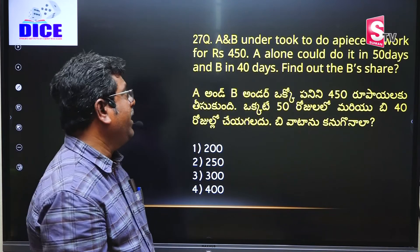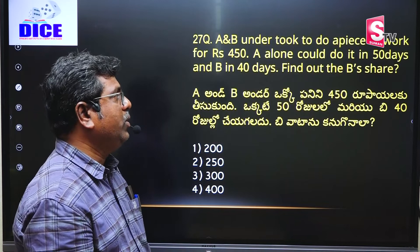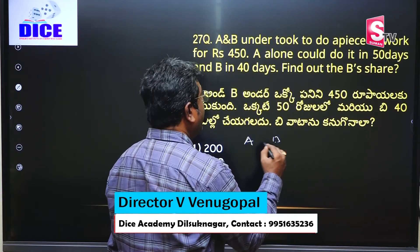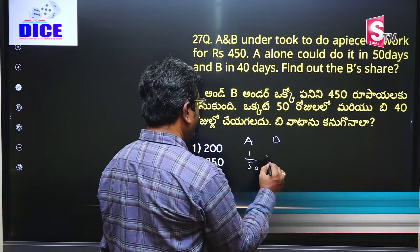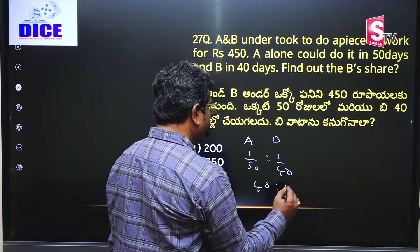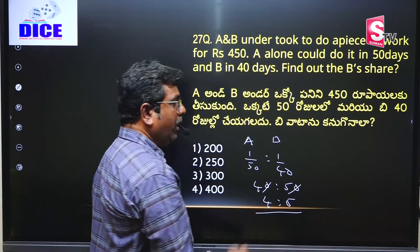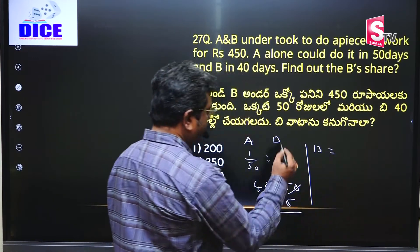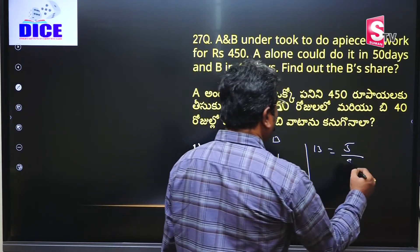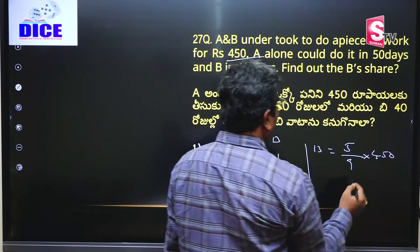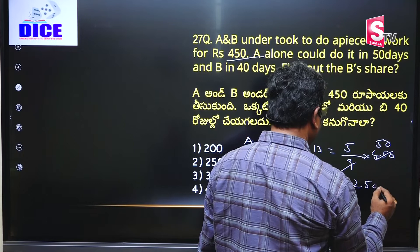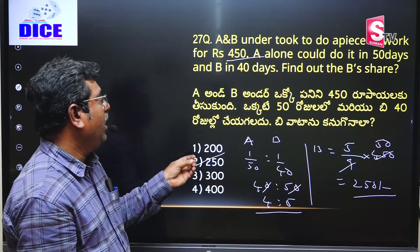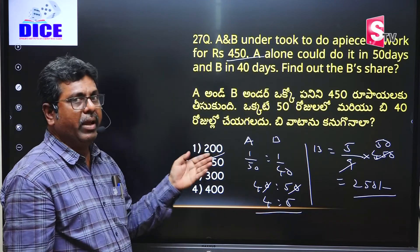A and B undertook a piece of work for ₹450. A can do it in 50 days and B in 40 days. Find B's share. First find their one day's work ratio: 1/50 to 1/40, which gives the ratio 40:50 = 4:5. B's share = 5/(4+5) × 450 = 5/9 × 450 = ₹250. These are the important problems in Time and Work — I am giving you the most important models and processes.